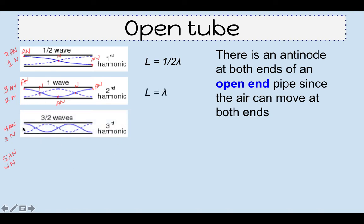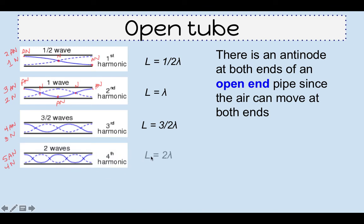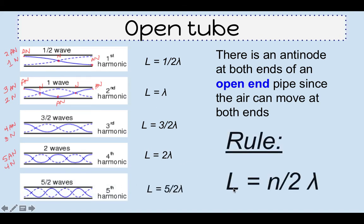The third harmonic gives L equal to three-halves lambda, and the fourth harmonic gives L equal to four-halves lambda, which is two lambda. There's a pattern: as we increase each harmonic, we increase by half a wavelength. So our general rule is L equals n over 2 times lambda, where n is the harmonic number. For the first harmonic, n=1 gives L equals one-half lambda. For the second harmonic, n=2 gives two-halves lambda, which is just lambda. Let's try an example problem with an open tube.